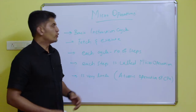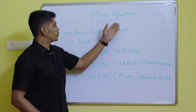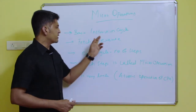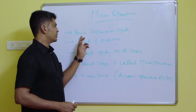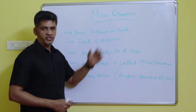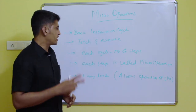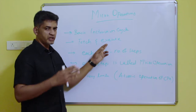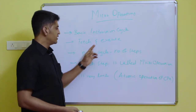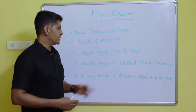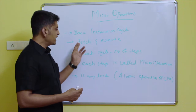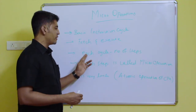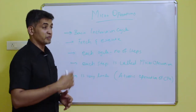In this video we are going to discuss about what is micro operations. We already discussed about the basic instruction cycle, which may have two basic phases: one is the fetch cycle and second one is the execute cycle. Each sub-cycle may have a number of steps.